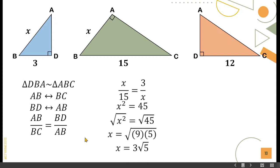Applying all the values: AB over BC — AB is X, BC is 15 — is equal to BD over AB — BD is 3, AB is X. Cross multiply: X times X is X squared, and 15 times 3 is 45.